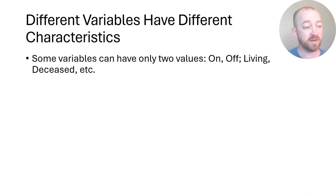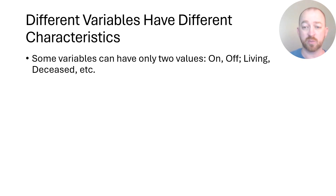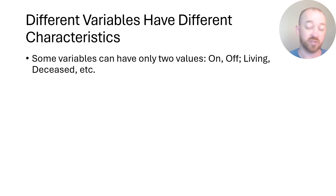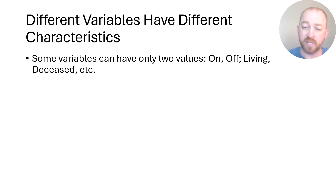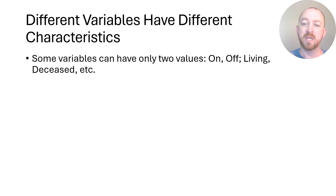Some variables naturally are just dichotomous, or binary, or have only two values. For example, a light switch could be on or off — there's not really anything in between. You could be living or deceased, and there's not really anything in between there. There can be things that are yes or no, like did you vote in the last election or not — you can't have sort of voted — so there are things where there's a clear distinction between these two things.